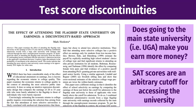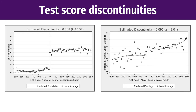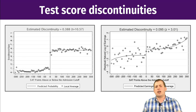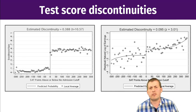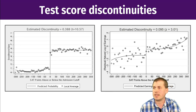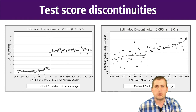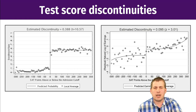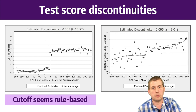The researchers exploited this discontinuity to see if earnings for people just on the border of acceptance differed. Looking at a plot of acceptance rates by SAT score, those above the admission cutoff had about a 50% acceptance rate, while those below had only about a 10% acceptance rate — much lower. This confirms the discontinuity works and that there is a rule-based cutoff.